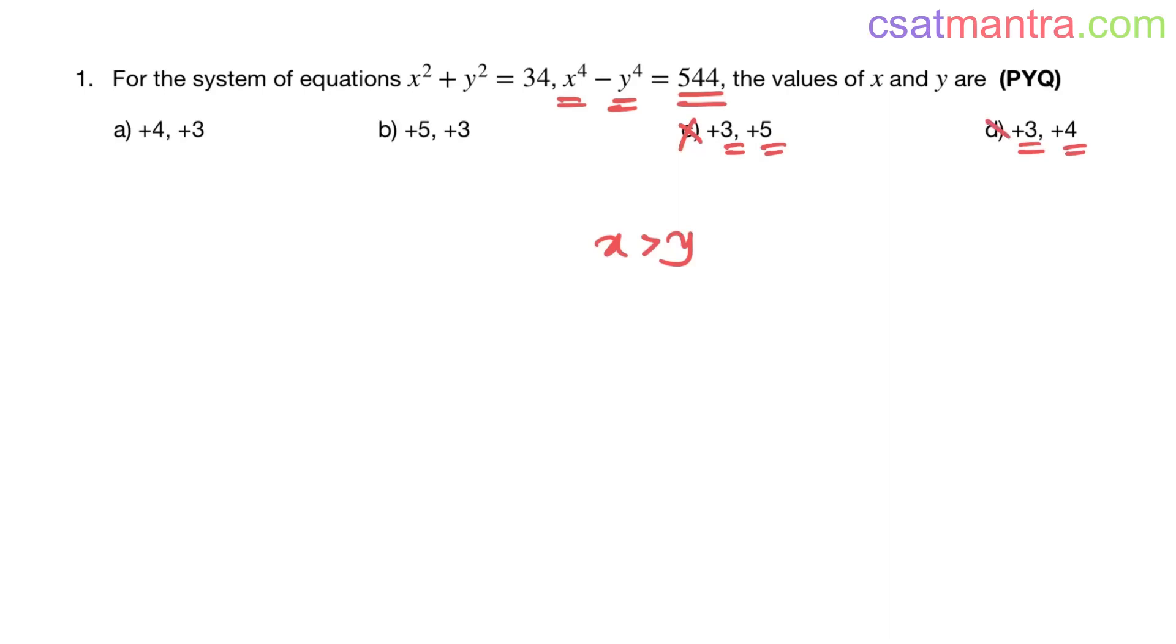Now from A and B, just check which option satisfies x² + y² = 34.